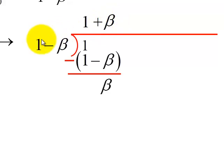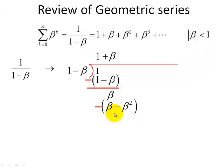When we multiply the beta term by 1 minus beta, that leads us to a quantity of beta minus beta squared. And when we finish the subtraction again, that leads to a beta squared.